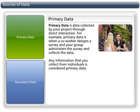Primary data is data collected by your project through direct interaction. For example, primary data is when a coworker designs a survey and your group administers the survey and collects the data. Any information that you collect from individuals is considered primary data.